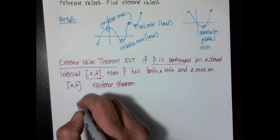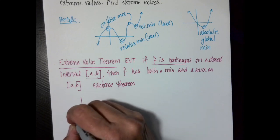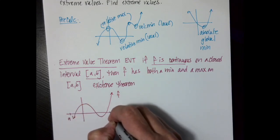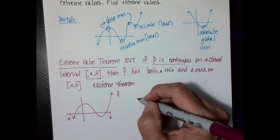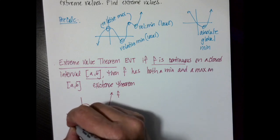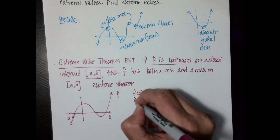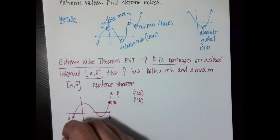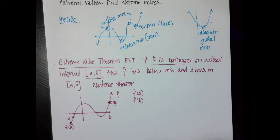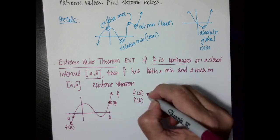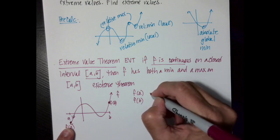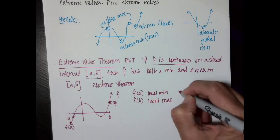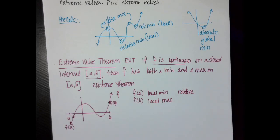Now let's talk about extrema from a calculus perspective. I'll have a function on an interval from A to B. I can find F of A and F of B — those endpoint values. On the closed interval, A can be a local minimum and B can be a local maximum. You can use the words 'relative' — either is appropriate and both are accepted.